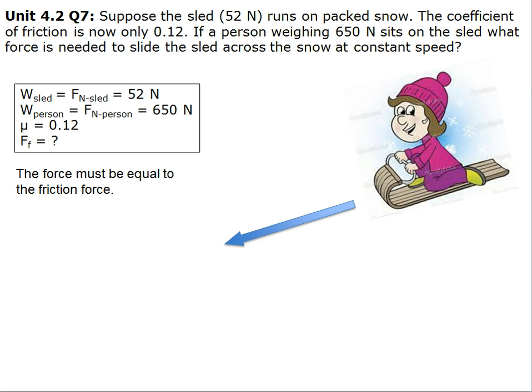The force must be equal to the friction force. The force of friction equals the coefficient times the net force, which equals the coefficient times the two weights added together, which equals 0.12 times 52 newtons plus 650 newtons.